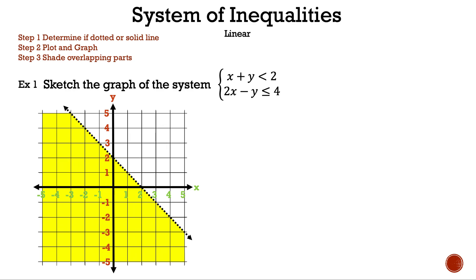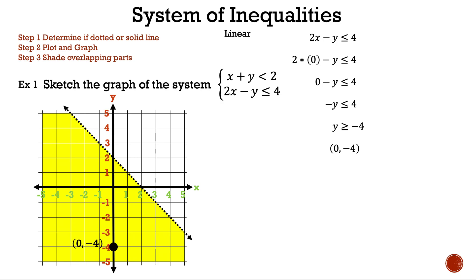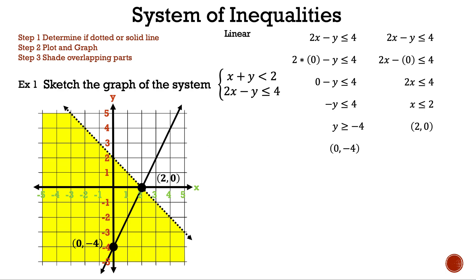Next, let's graph 2x minus y is less than or equal to 4. Here, we pick 0 for x and solve for y. Our result is y is greater than or equal to negative 4, which means our first point is (0, negative 4). Next, let's substitute 0 for y and solve for x. Our result is x is less than or equal to 2, which means our second point is (2, 0). Now, let's draw our line. Why do we think we have a solid line? That is correct — the inequality 2x minus y less than or equal to 4 has an or equal to sign.